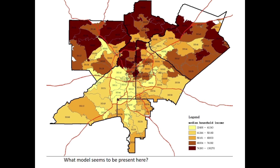See if you can spot anything else on this model that shows whether it might be the concentric zone or sector model. Maybe there's some other data you can find that shows whether other models are present in Atlanta — we haven't looked at the multiple nuclei model or the galactic city model yet. Simply take the time to do the rest of the things on the assignment that I list there for you. We'll do an activity next class to see if we can find some of these other models in Atlanta. Hope this was helpful and easy to understand — have a great day.